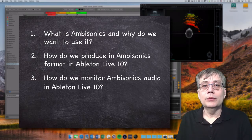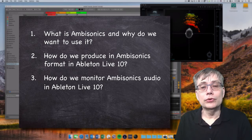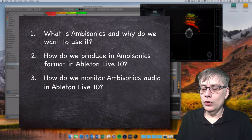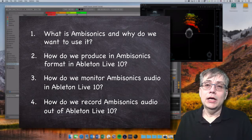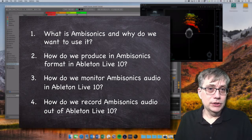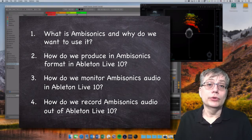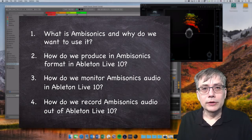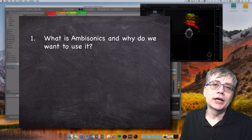In the third part, we're going to talk about how we are going to monitor that, because we not only want to produce audio, we actually want to listen to it. How are we going to listen to something that is a completely immersive audio format? In the fourth and final part, we're going to talk about how to record ambisonics, because Ableton natively is not capable of bouncing tracks in ambisonics format. So we need to find another way to get that information out of Ableton and record it to our hard drive. But let's first look into what ambisonics is and why we actually want to use it.